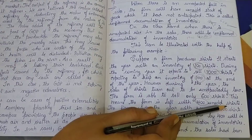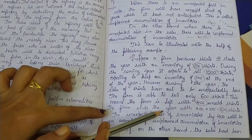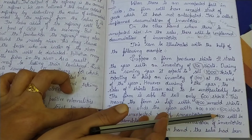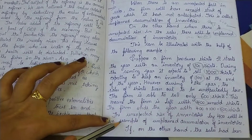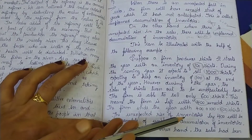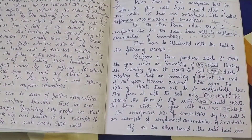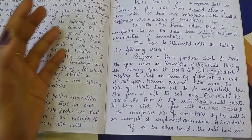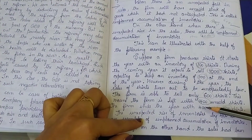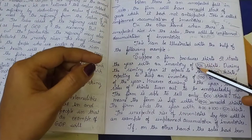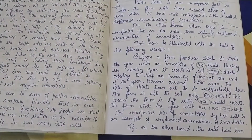So the firm ends the year with four hundred unsold shirts plus the one hundred opening inventory — giving a total closing inventory of five hundred shirts. We expected the closing inventory to be one hundred, but instead we are left with five hundred. This unexpected rise in inventory is an example of unplanned accumulation of inventories — the extra four hundred shirts accumulated unplanned.